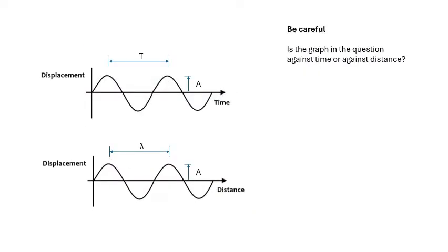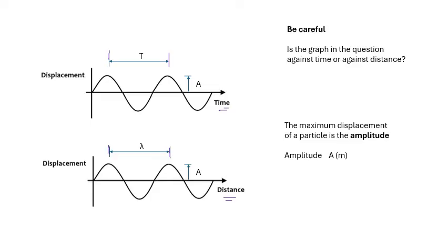There are two very different graphs to be careful with: displacement against time, and displacement against distance. If the graph is against time, the repeat interval is the periodic time T. If it's against distance, the repeat interval is the wavelength λ. On both graphs, the maximum displacement from the centre of oscillation is the amplitude, capital A, measured in meters.